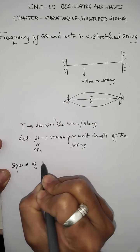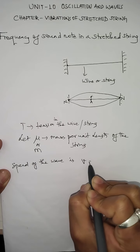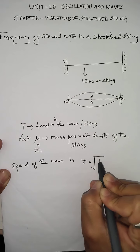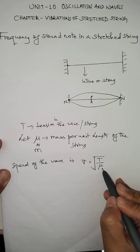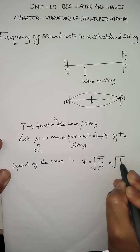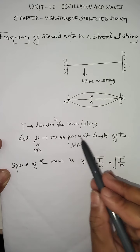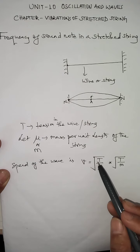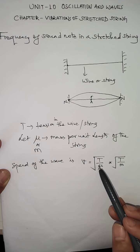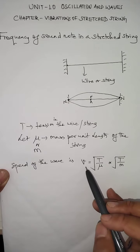With this we can now express the speed of the transverse wave. The speed v is given by v = √(T/μ), which we can also write as the square root of tension divided by mass per unit length. Here T is the tension in the wire or string, and μ (or m) is the mass per unit length of the string or wire.